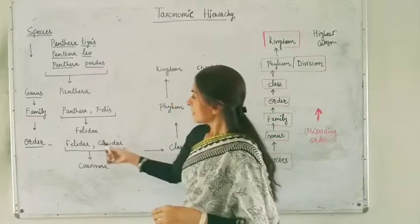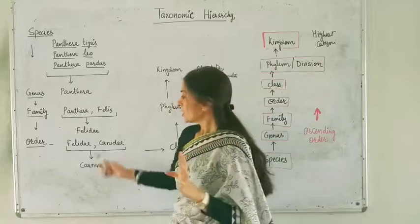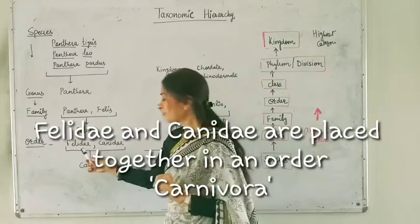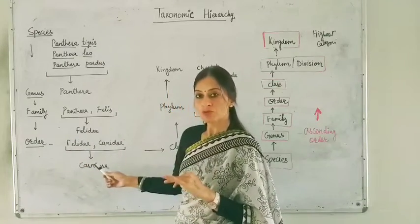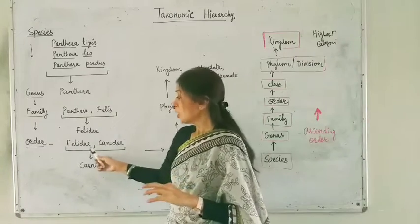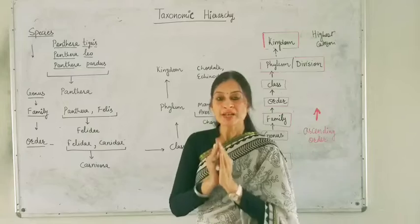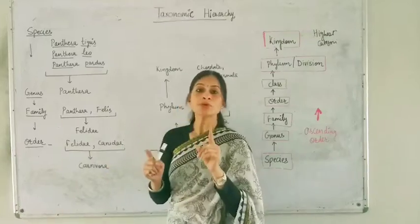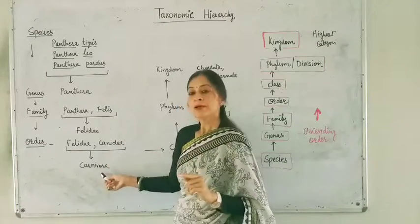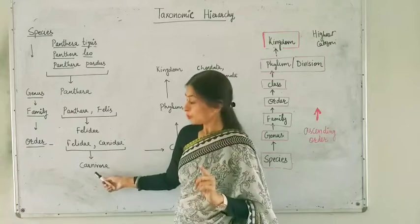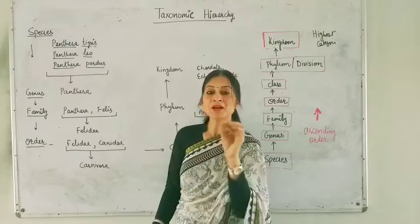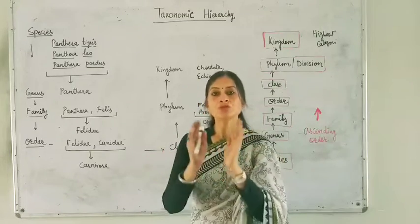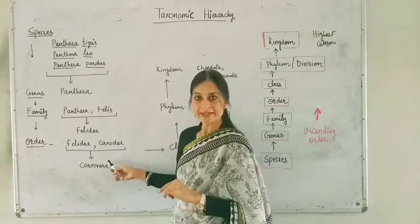For example, the cat family (Felidae) and the dog family (Canidae) share some common features. On that basis, we have placed them in a common order called Carnivora. So Carnivora has two related families — the cat family and the dog family — which share some features and are therefore grouped together in the order Carnivora.